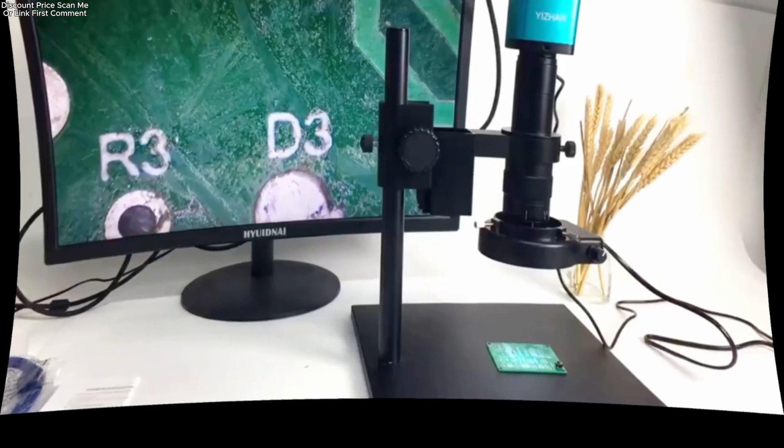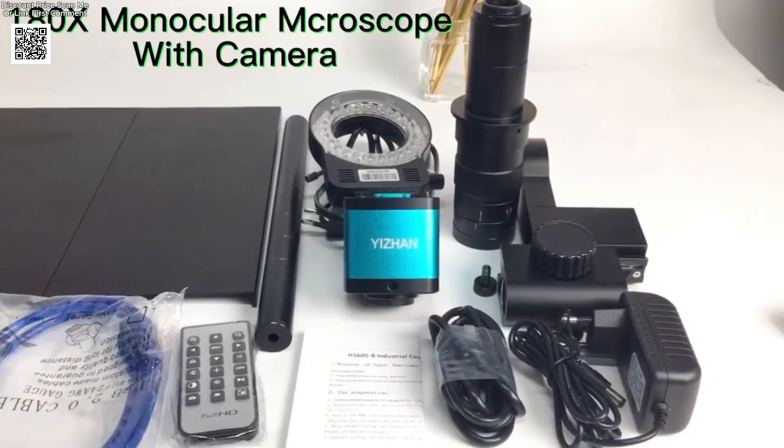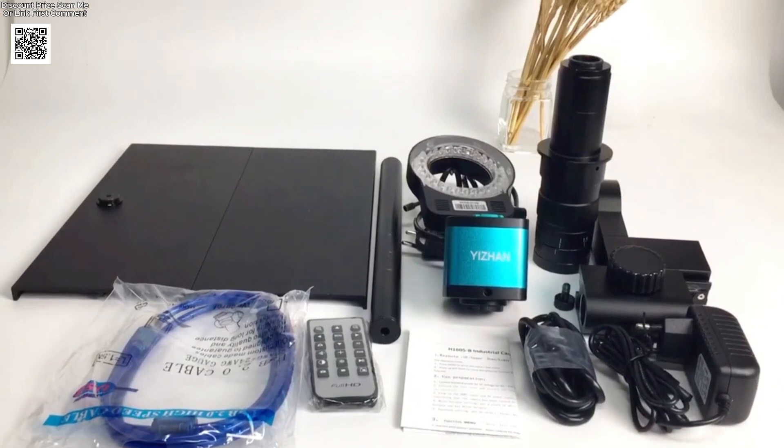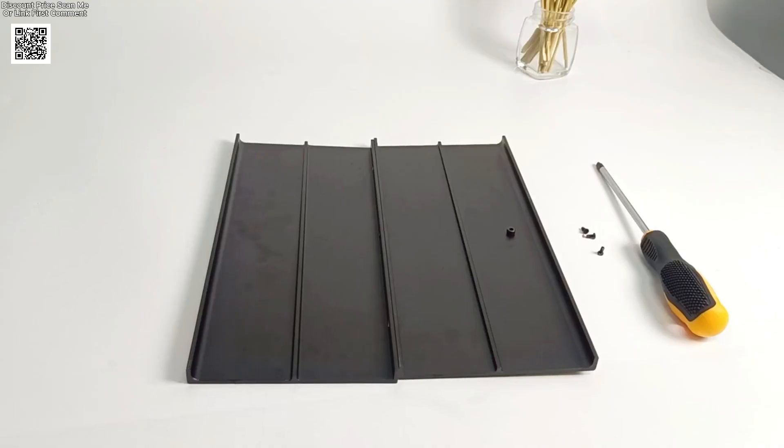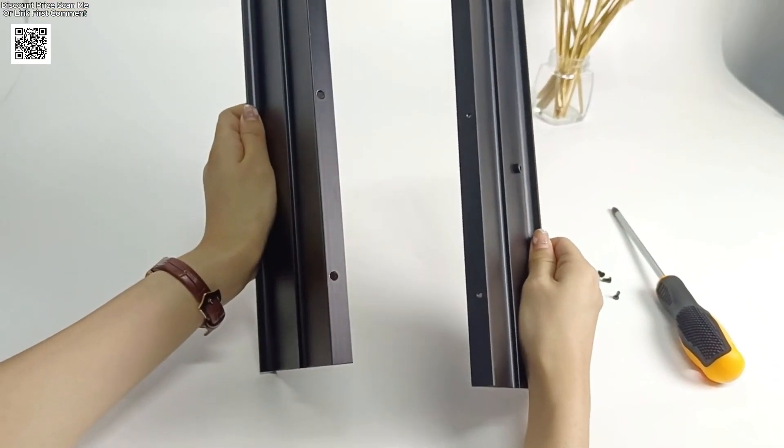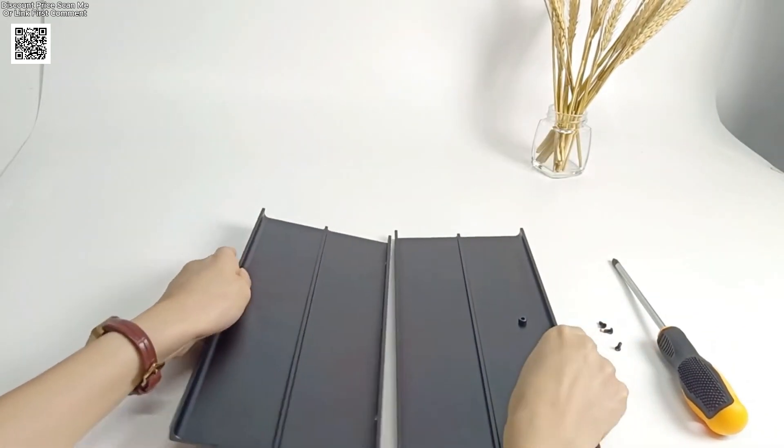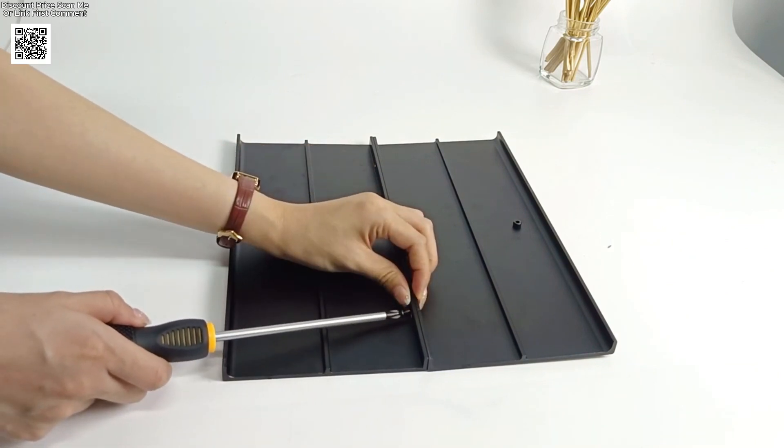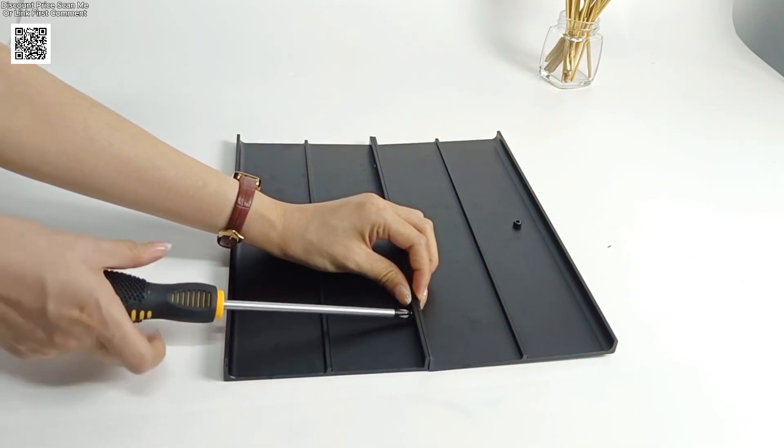Meet the Yizhan XHU 4002 digital microscope, a professional 4K solution for precision work available now on AliExpress. Designed for soldering, phone repair, and industrial inspection, this advanced microscope combines ultra-high-definition imaging with versatile functionality. Featuring a 48-megapixel Panasonic sensor, the camera delivers stunning clarity.